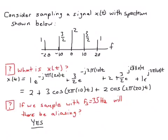Yes, there will be aliasing because Fs, which is 35, is less than 2F max. 2F max is 2 times 20 or 40. So we expect aliasing in this case.